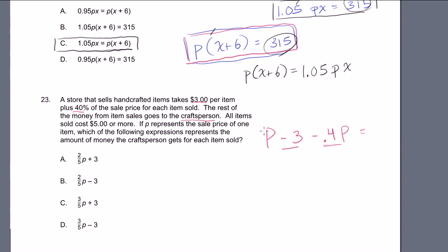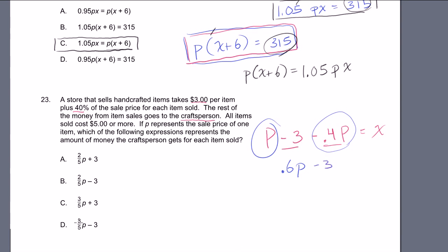So the craft person gets p minus 0.4p minus 3. That simplifies to 0.6p minus 3. The answers are written as fractions, and 0.6 is the same as 3/5, so the expression is 0.6p minus 3 — but checking the choices, 0.6 is equivalent to 0.3p minus 3... so it is choice D.